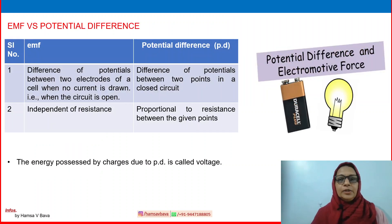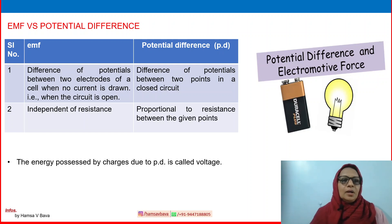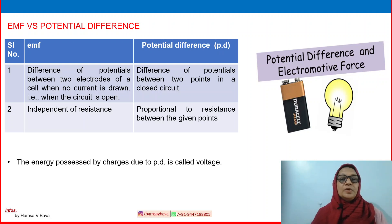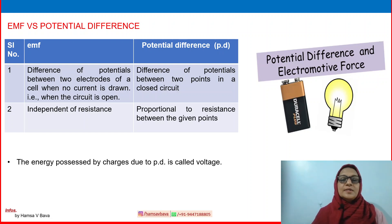There are two further terms: EMF and potential difference. EMF — electromotive force — is the difference of potential between two electrodes of a cell when no current is drawn, meaning the circuit is kept open. Potential difference is the difference of potentials between two points in a closed circuit where there is current flowing. EMF is independent of resistance, but potential difference is proportional to the resistance between the given points. The energy possessed by a charge due to potential difference is called voltage.